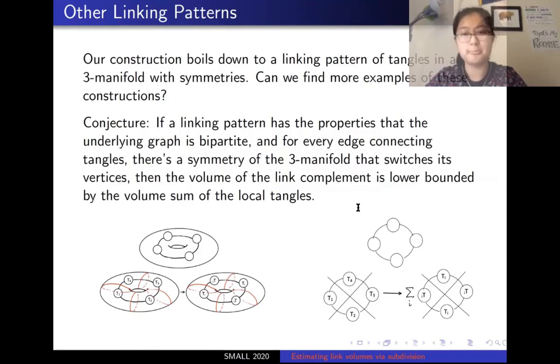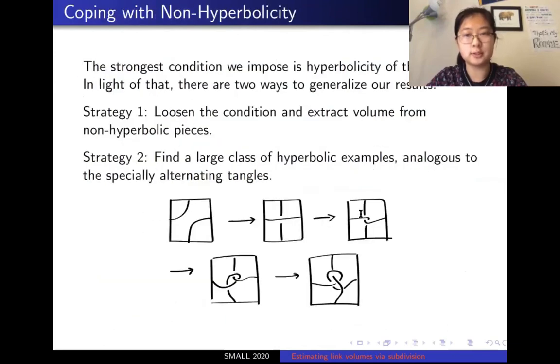So, how much symmetry is enough symmetry? We conjecture that a graph on some three manifold will serve as a valid template for analogous results if the underlying graph is bipartite and for every edge of the graph there's a symmetry in the manifold that switches its two vertices. For this strategy to work, by far the strongest condition we impose on the local pieces is in fact hyperbolicity, for example, asking for hyperbolic doubles or hyperbolic n-tuples. A further direction we'd like to pursue is how to loosen that condition. In particular, when we're decomposing a link, we often get a mixture of hyperbolic and non-hyperbolic pieces. It's a waste not to take the non-hyperbolic ones into account. So, the question is, is there a way to compute volume contributed by a piece that doesn't even inherently have a notion of volume?